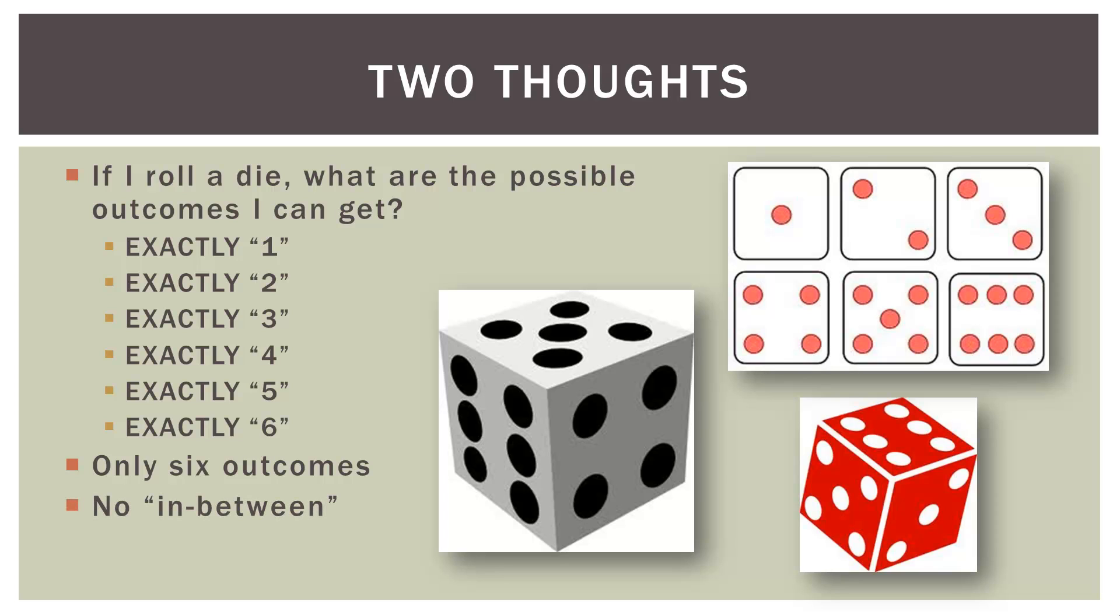There are no in-between values, so I cannot roll a two and a half. Now, someone might say, well, the die could land on its edge. Well, if you'd like to spend the rest of your life throwing a die into a perfectly smooth box or surface to see if you can get it to land on its edge, by all means, go ahead and do that. But we're going to just assume that if we throw a die, we can get one of six outcomes, one through six, with no in-betweens.